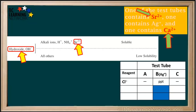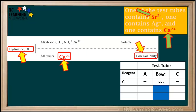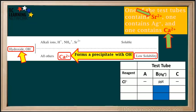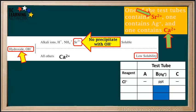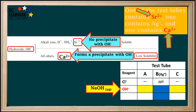Now we'll look at hydroxide, OH-. We see that strontium is soluble with hydroxide, but calcium is not in the soluble group, so it must be in the low-solubility group. In other words, calcium ions form a precipitate with hydroxide, whereas strontium ions do not. So we'll add a solution of sodium hydroxide to test tubes A and C — NaOH is a source of the OH- ion. The one that forms a precipitate with OH- is the one that contains the calcium ions.